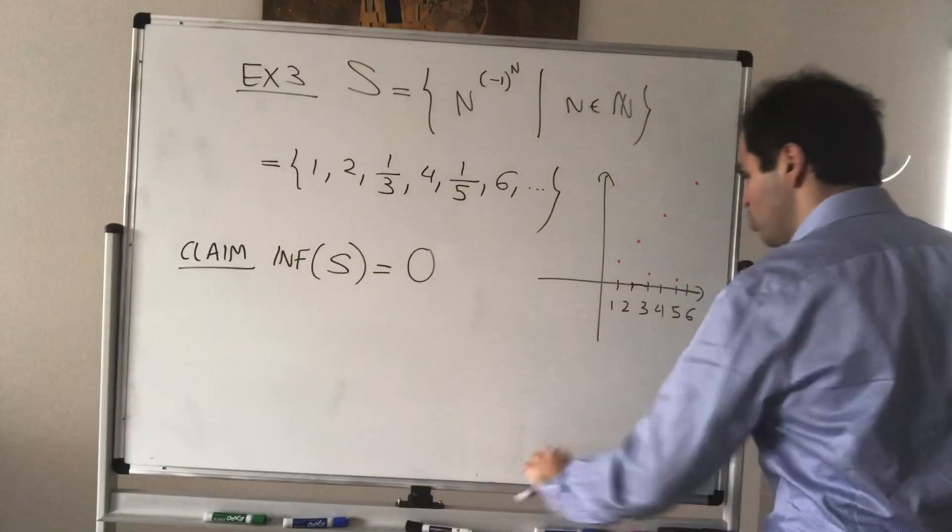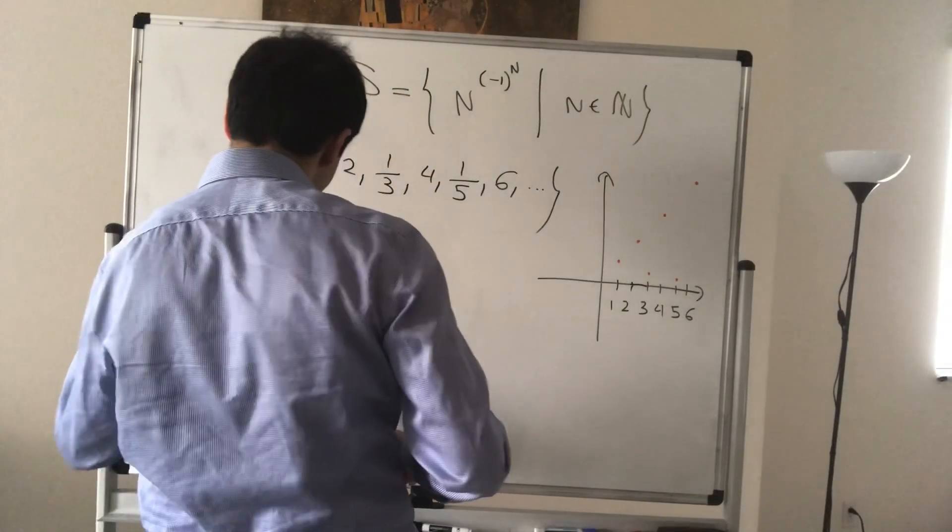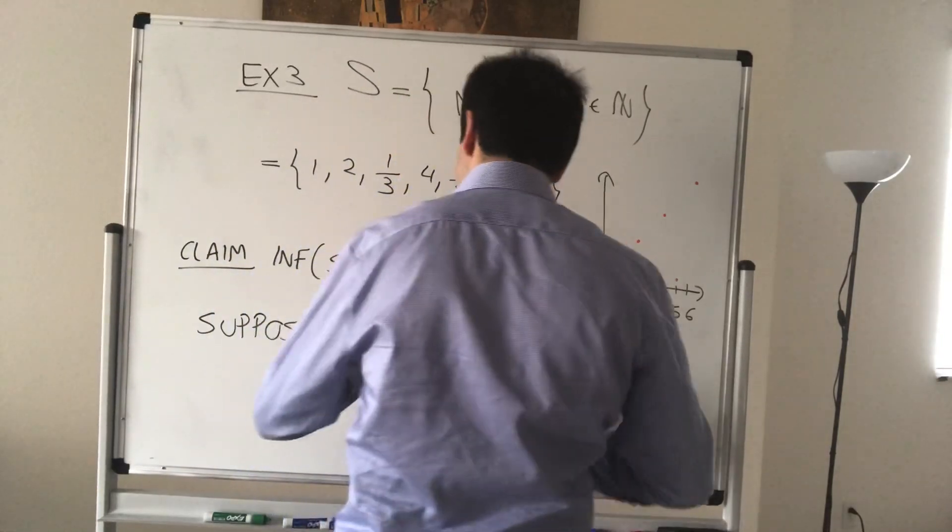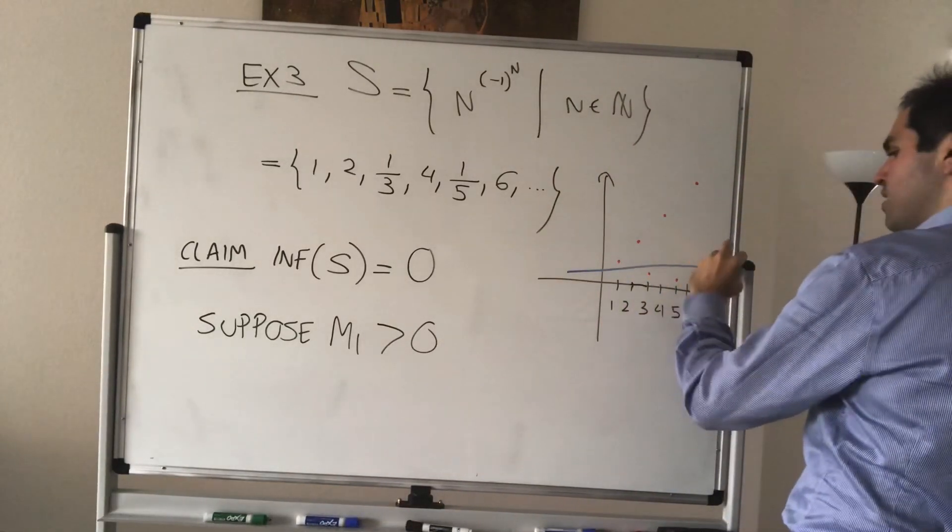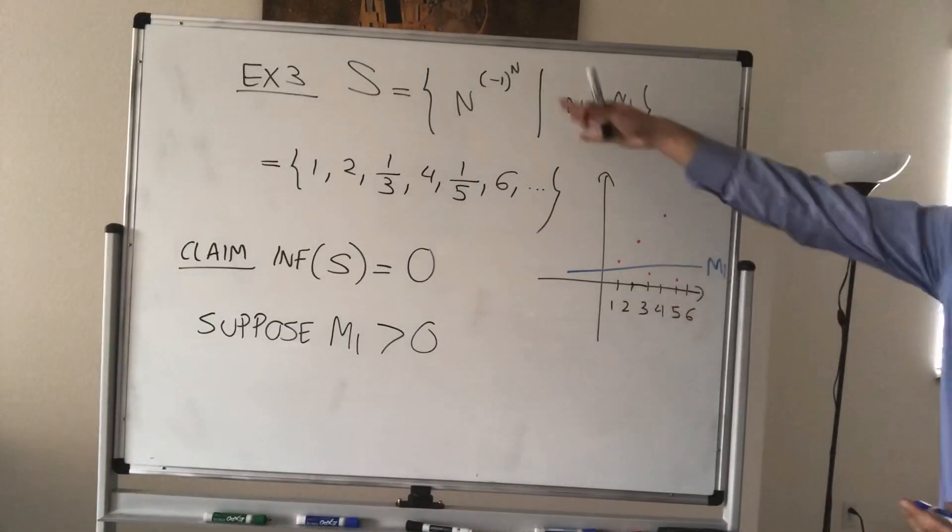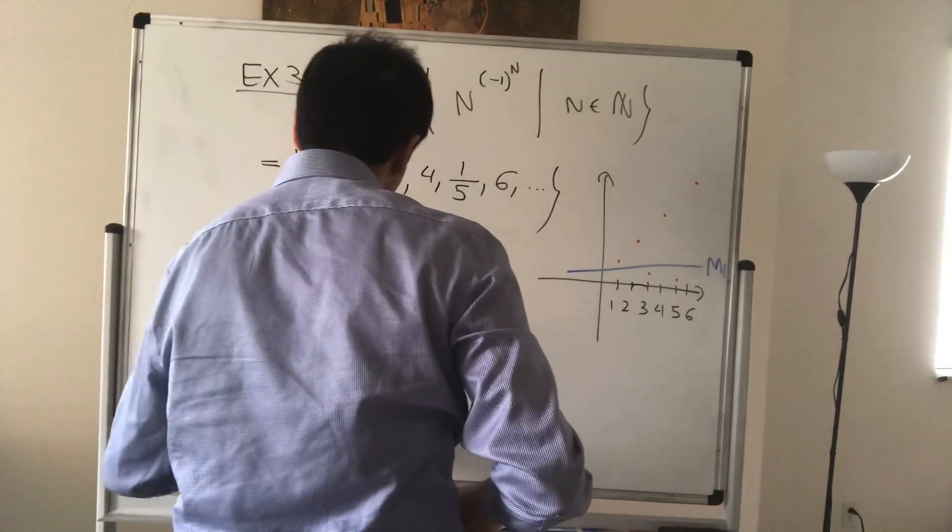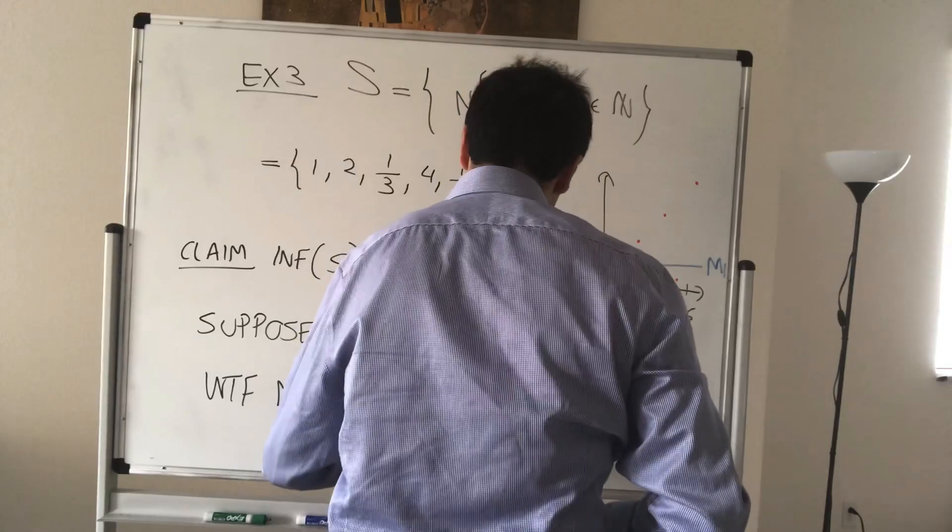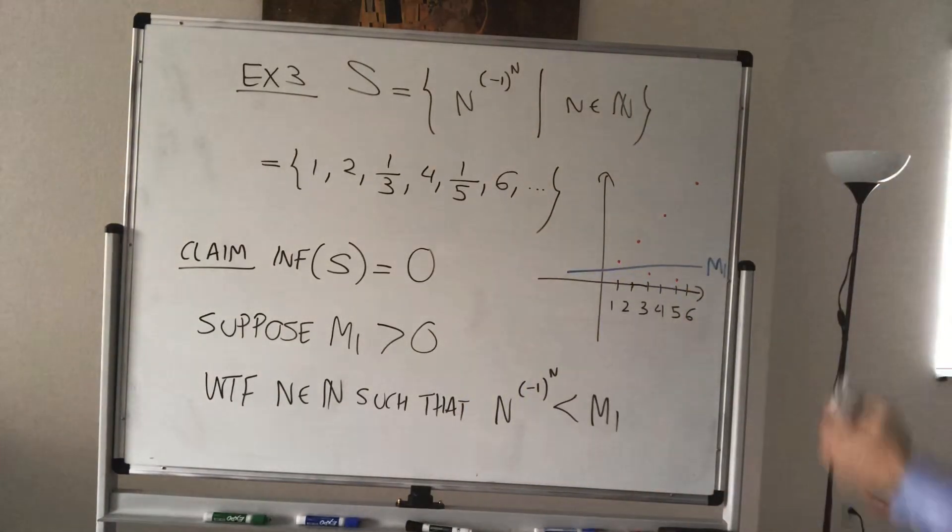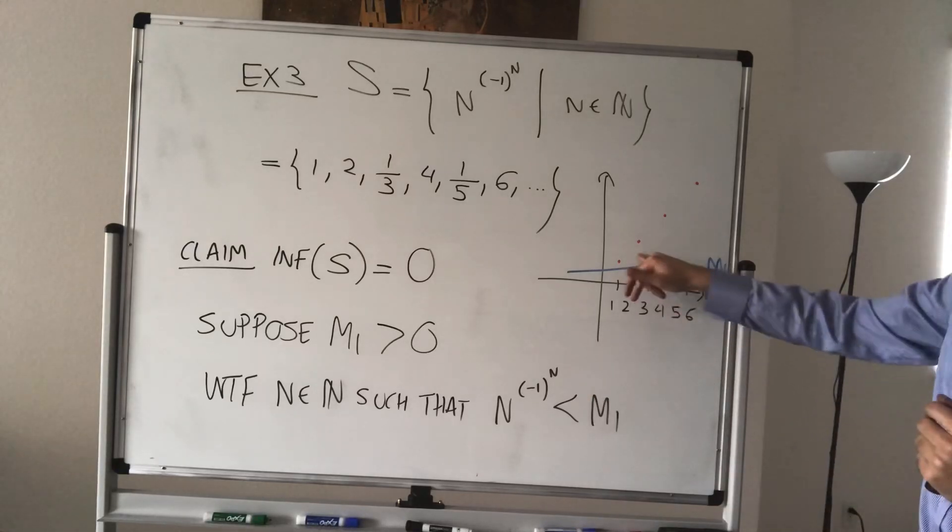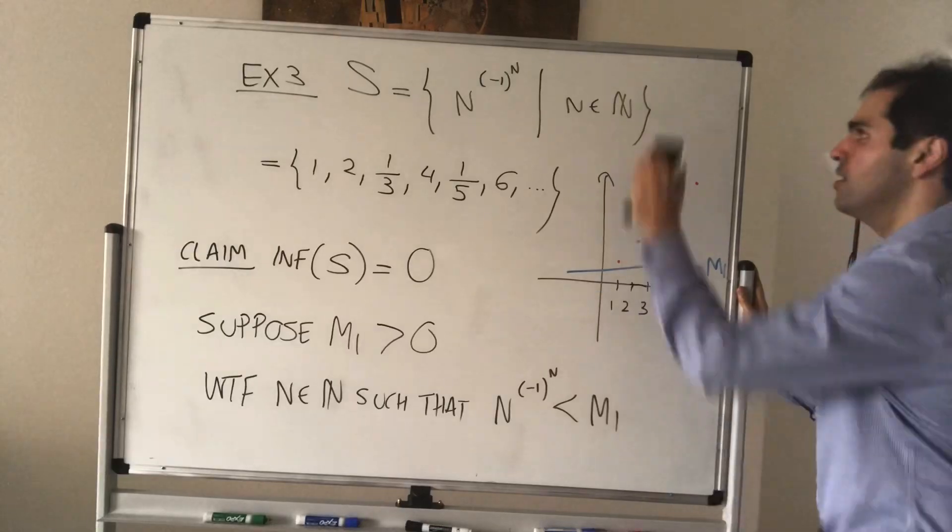So, claim the infimum of this set is 0. And, again, what do we have to show? So, suppose I tell you, you did not get the lowest grade. So, suppose M1 is bigger than the lowest grade, which is 0. What you have to show is that there is some student who got a lower grade than you. So, you have to find some number in that sequence that is smaller than M1. So, what we really want to do, we want to find N such that N to the minus 1 to the N is smaller than M1. Now, here's the thing. Which ones do we consider? Well, for even N, notice that this sequence just blows up. So, in particular, we just want to focus on odd values of N. So, suppose N is odd.